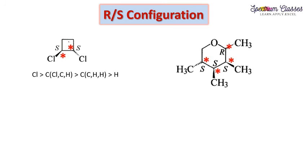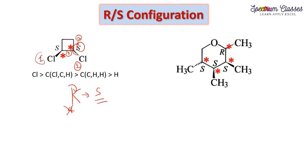In the next examples: for this carbon, first, second, and third priority groups are assigned. The fourth priority is H, but Cl is on the dashed wedge — so I must place Cl on the vertical line. The rotation of 1, 2, 3 is clockwise (suggesting R), but since my fourth priority is not on the vertical line, I make one interchange and get S. For the adjacent carbon, my fourth priority group is on the dashed wedge and the rotation is anticlockwise, directly giving S.